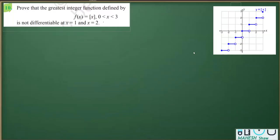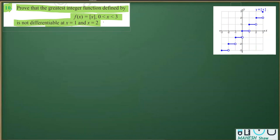This is question number 10 from exercise 5.2. In this case we have to prove that the greatest integer function defined by f(x) = ⌊x⌋, where x is greater than 0 and less than 3, is not differentiable at x = 1 and at x = 2.